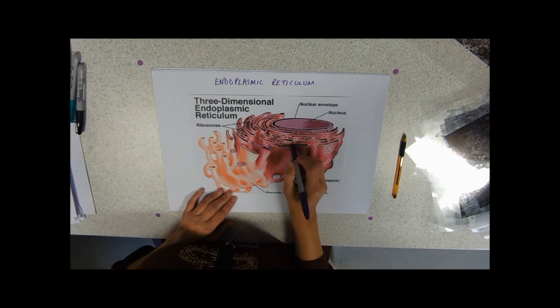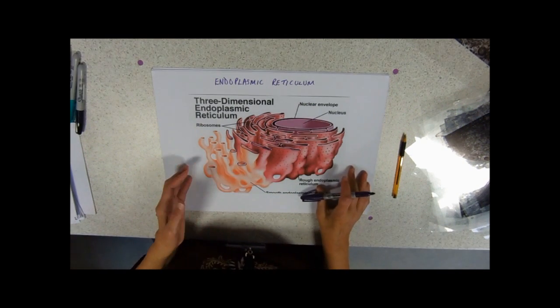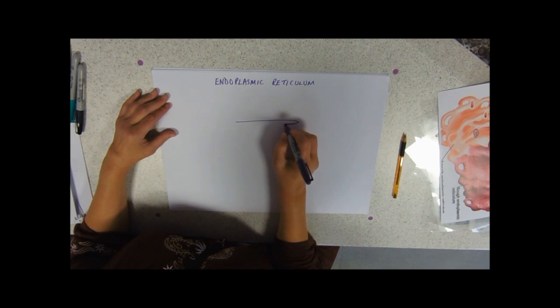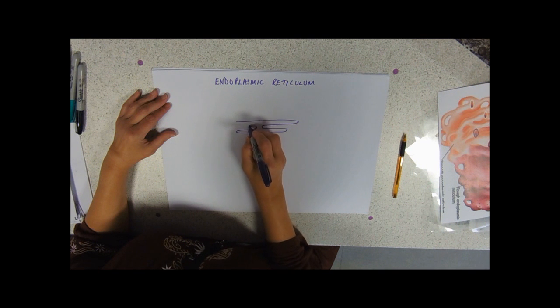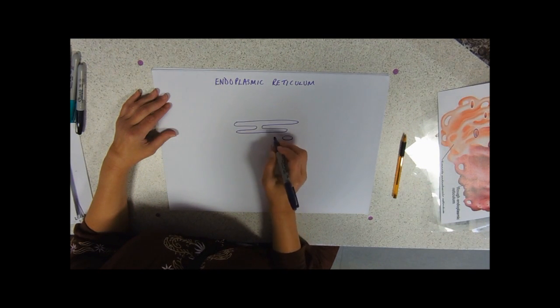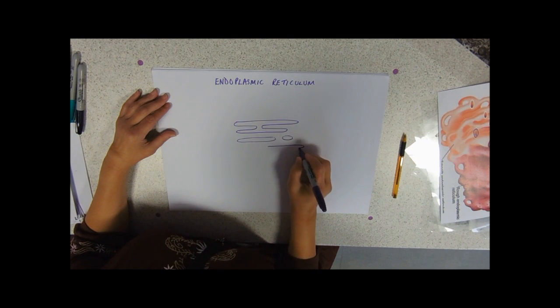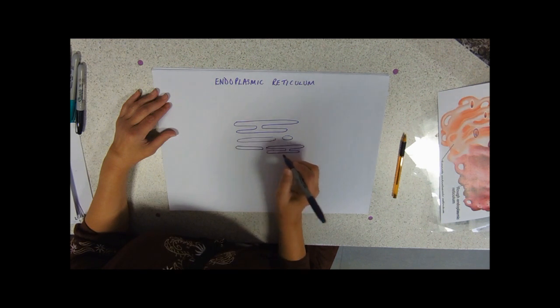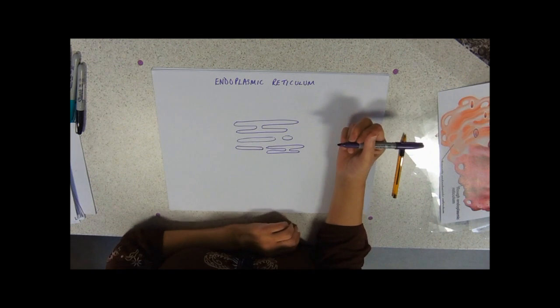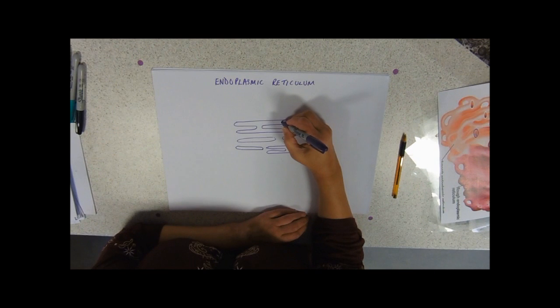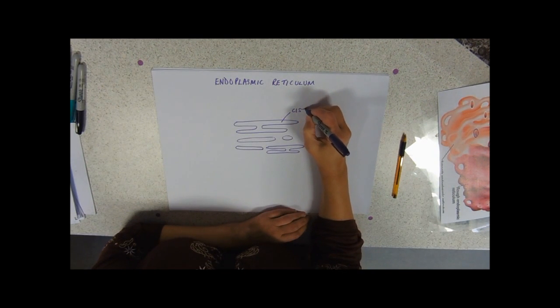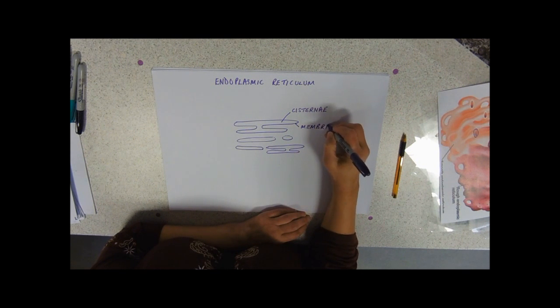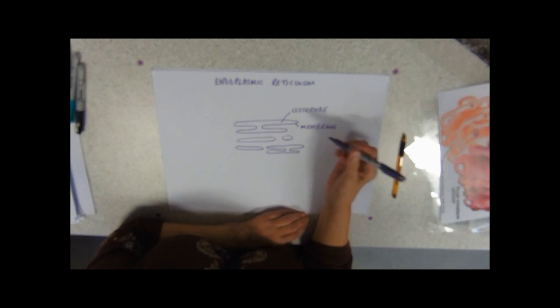So when you're drawing endoplasmic reticulum or looking for it, you're looking for something that might look like that. There might be another bit that's more circular. It might have bits like that. So effectively that makes it look on an electron micrograph because these are small, these are membranes, like tram lines. These spaces in the middle are called cisternae. So you've got membrane, enclosing cisternae and obviously these are all interconnected.